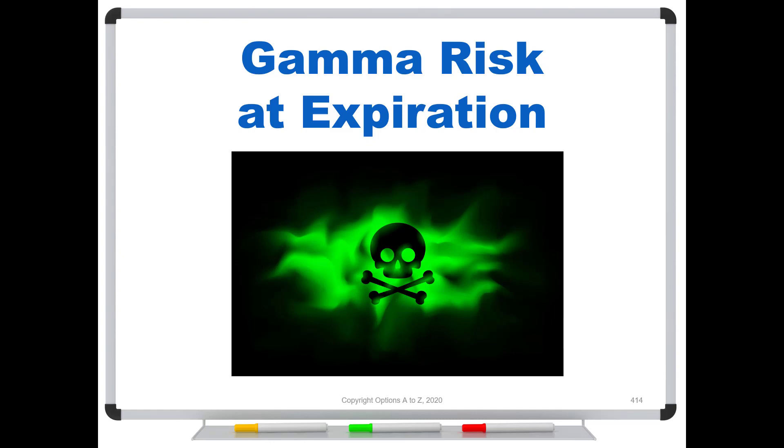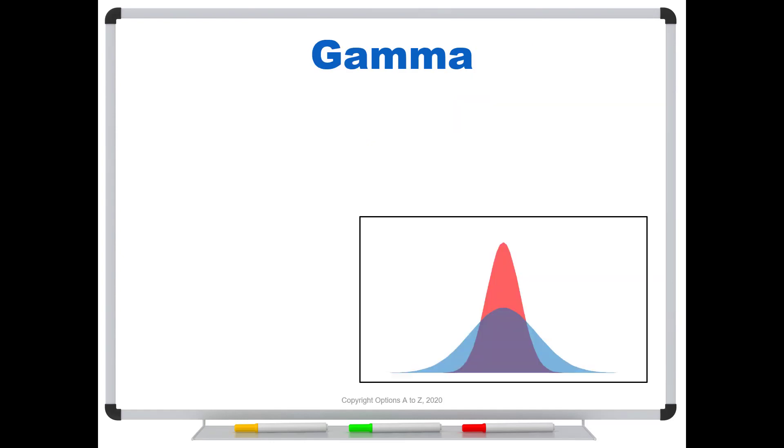And while gamma is always a risk of our positions, it becomes a particular risk as you get closer to expiration. So recall that gamma shows how quickly your deltas will change, and that's why it's sometimes called the delta of the delta. Now, if you're new to your Greeks, I do have other videos specifically on them, delta and gamma and the others. You can go back and review them. But for right now, I just want you to understand that gamma shows how quickly those deltas will change.